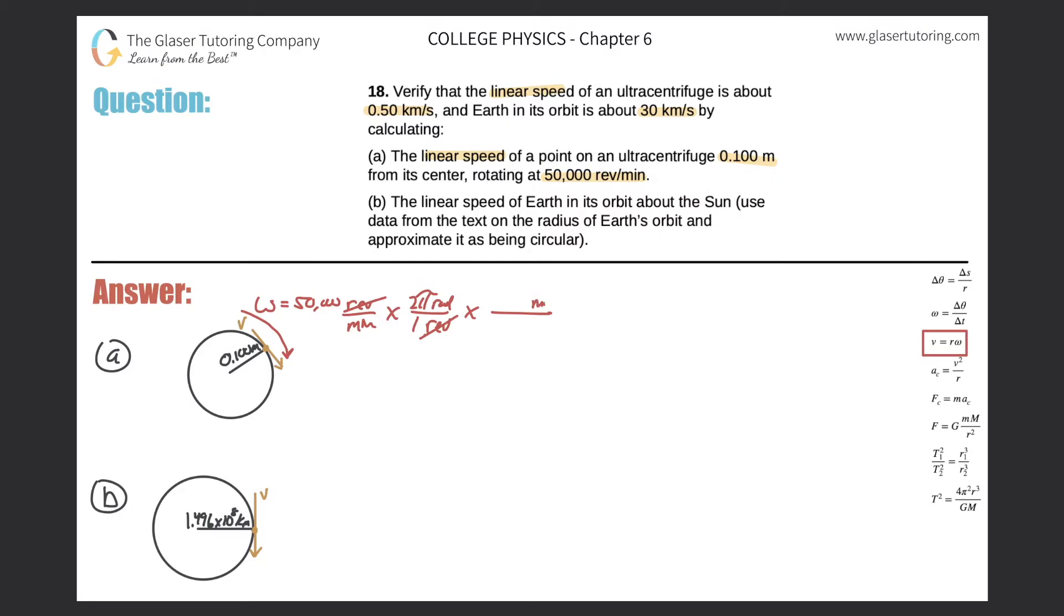And then minutes have to cancel. I'll go to seconds right away because I know the relationship there: 60 seconds in a minute. So this should be straightforward: 50,000 times 2 times pi all divided by 60. So this works out to be 5.24 times 10 to the 3 radians per second.